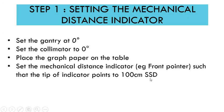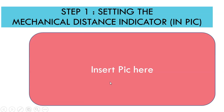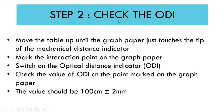Once you have set the mechanical distance indicator so that the tip represents 100 centimeters, move the table up close to that pointer until the graph paper touches the tip of the mechanical distance indicator. Mark the interaction point on the graph paper and lock the table at this position.